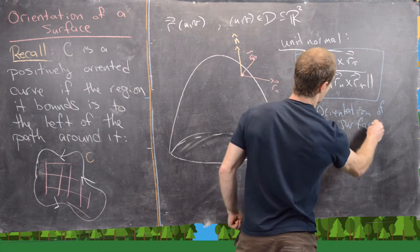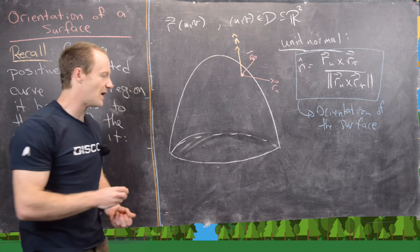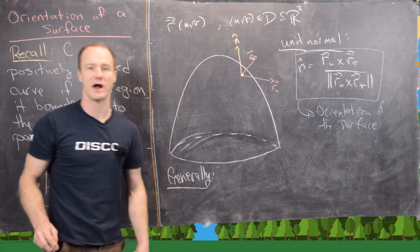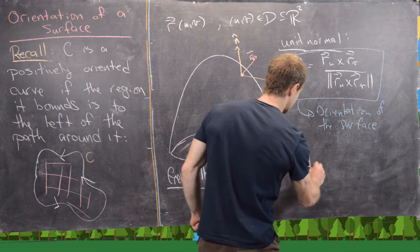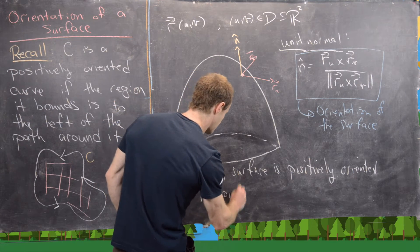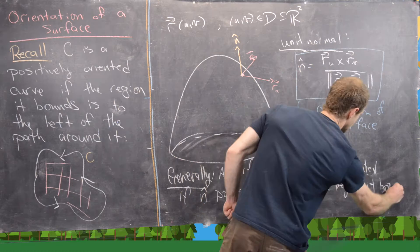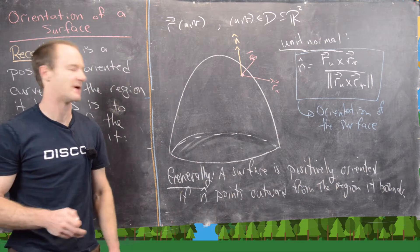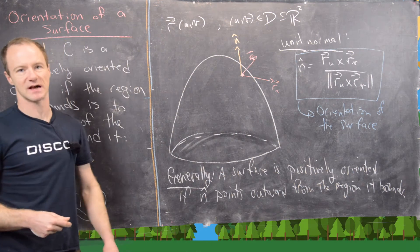So instead of really having a positive or negative orientation like a curve, the orientation of a surface is given by the unit normal vector itself. That said, there is still a way to think about positive or negative: a surface is positively oriented if N-hat — the unit normal vector — points outward from the region it bounds. Notice in this picture the unit normal vector is pointing out from whatever is inside this upside-down bowl.